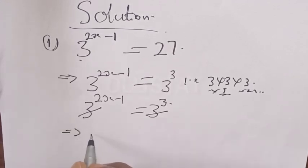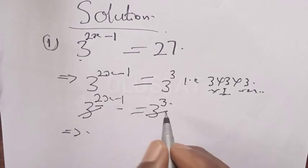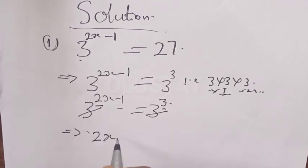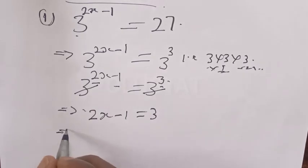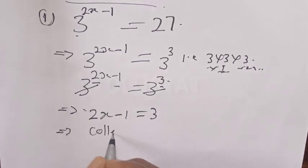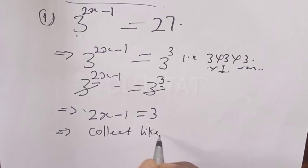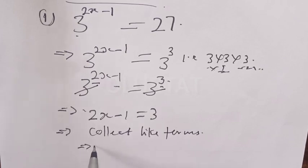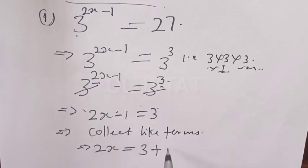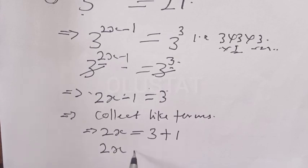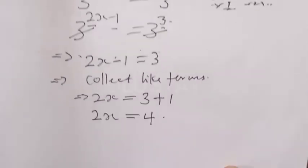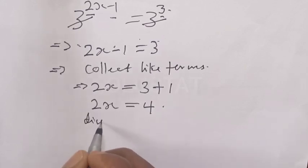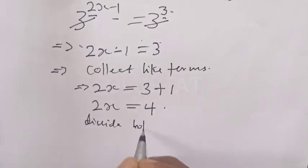We have 2x minus 1 is equal to 3. Adding 1 to both sides gives 2x is equal to 4.